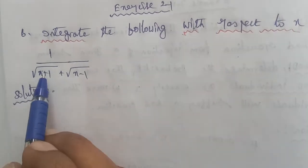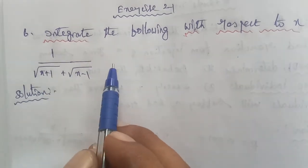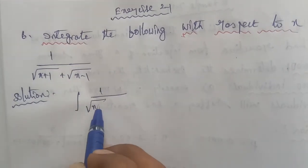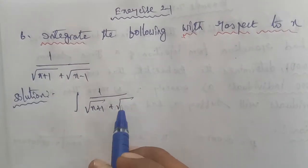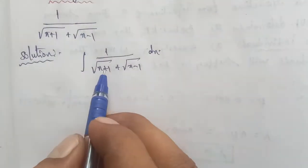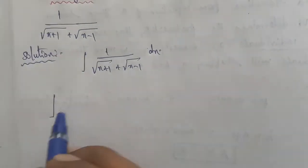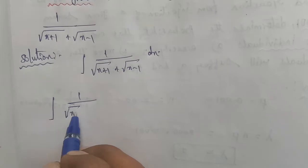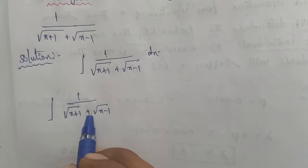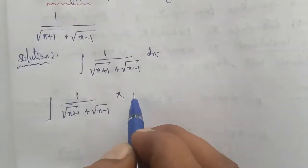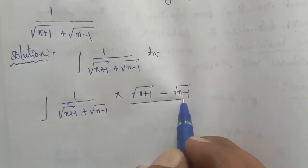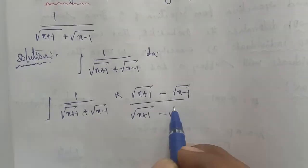So first of all, the square root terms in the denominator need to be cancelled. To cancel the roots, we multiply by the conjugate. So the given integration of 1 by square root of X plus 1 plus square root of X minus 1, we multiply by the conjugate: square root of X plus 1 minus square root of X minus 1, divided by square root of X plus 1 minus square root of X minus 1.